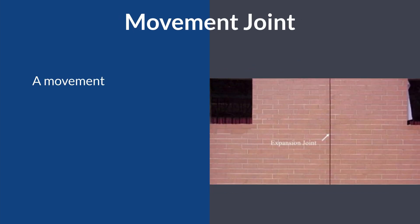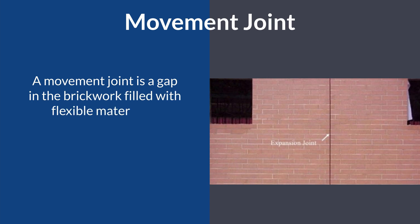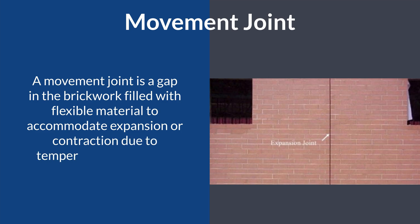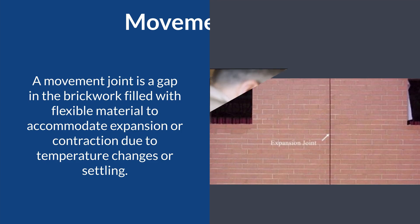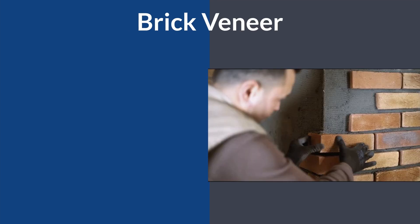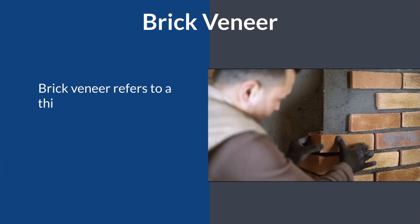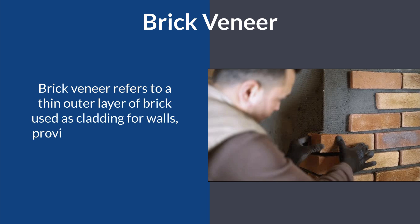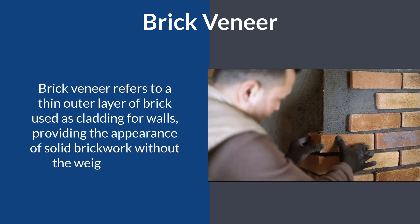14. Movement Joint. A movement joint is a gap in the brickwork filled with flexible material to accommodate expansion or contraction due to temperature changes or settling. 15. Brick Veneer. Brick veneer refers to a thin, outer layer of brick used as cladding for walls, providing the appearance of solid brickwork without the weight or cost.